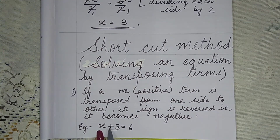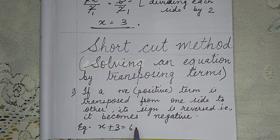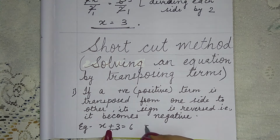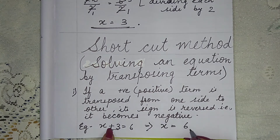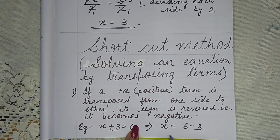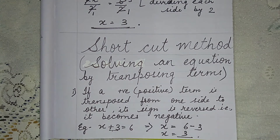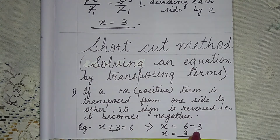For example, if you have x plus 3 equals 6, the positive 3 moves to the other side and becomes negative: x equals 6 minus 3, so x equals 3. This is a simple shortcut method.